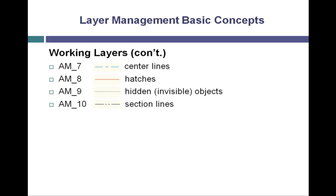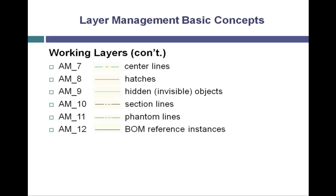AM underscore ten is used by the section line command, has a phantom line type and a black or white color depending on your background color. AM underscore eleven also uses a phantom line type but uses a green color. AM underscore twelve is used by the bill of material part reference command to place the part reference instances. It does not contain the definitions of the part references, just the instances.